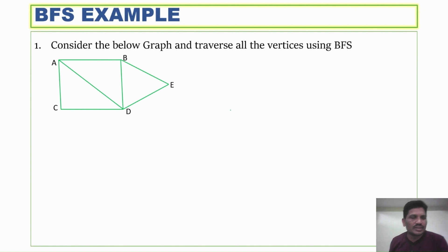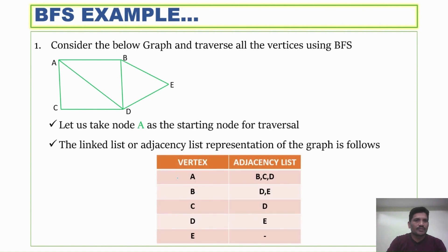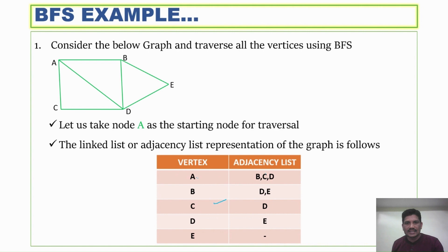Consider the graph shown below — how do you visit all the vertices using BFS? The selected starting vertex is A. The adjacent vertices of A are B, C, and D.